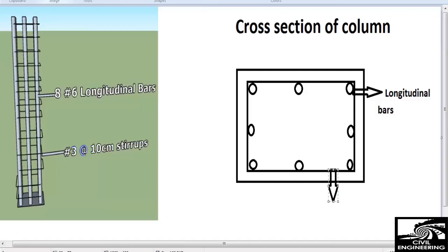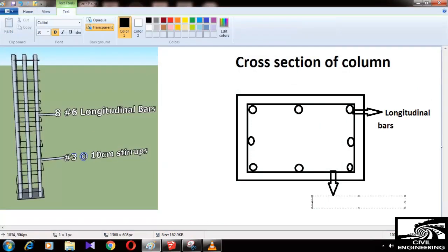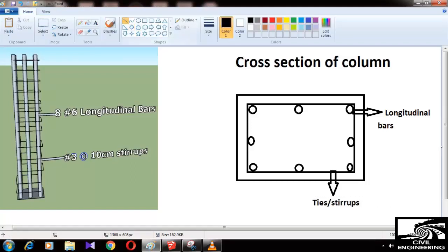These are the ties. You can see on the left-hand side, number three at ten centimeter stirrups or ties. These are the ties which hold the longitudinal bars in place. The good word to use in columns is ties, while stirrups is used basically in beams.